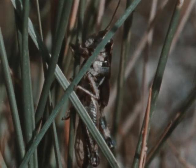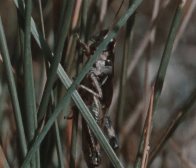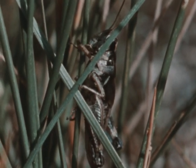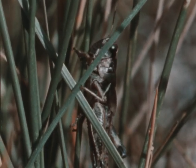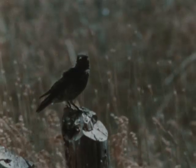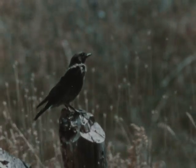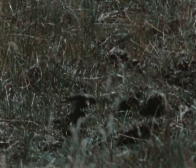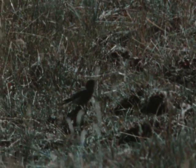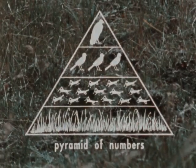It takes a great many herbivores, such as grasshoppers, to feed one primary carnivore, such as a bird. Each niche contains a larger number of individuals than the niche that eats it. This numerical relationship is called a pyramid of numbers.